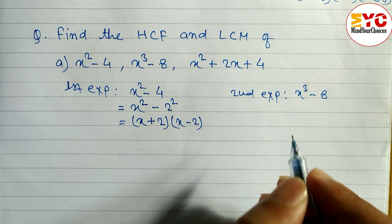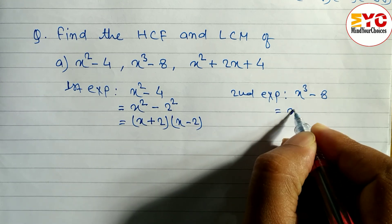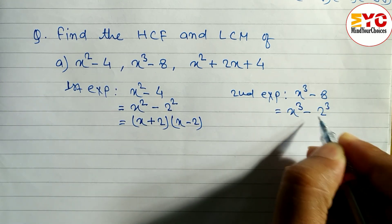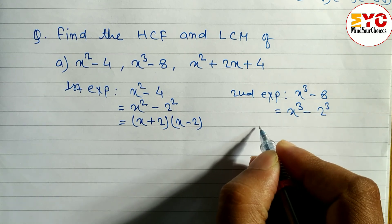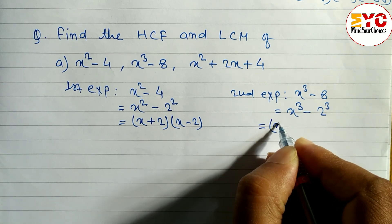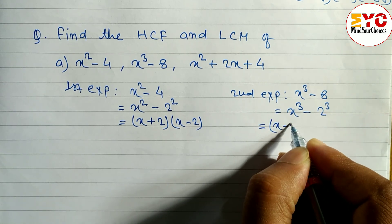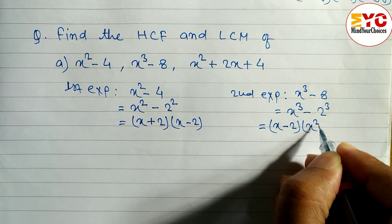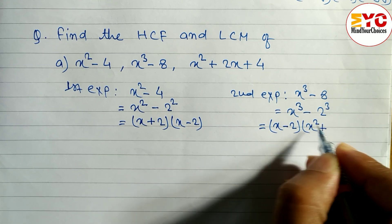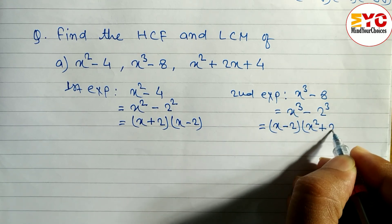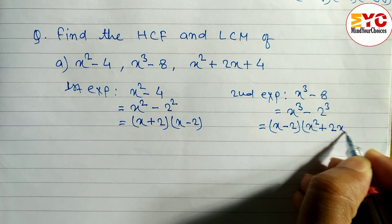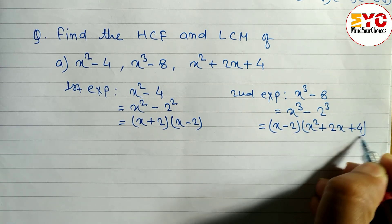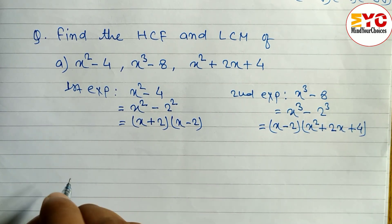The second expression is x³ - 8. We convert this using the a³ - b³ form, where 8 means 2³. The formula for a³ - b³ is (a - b)(a² + ab + b²), so we write (x - 2)(x² + 2x + 4).